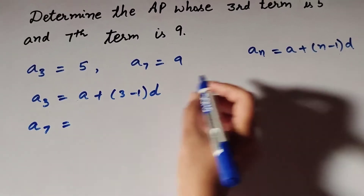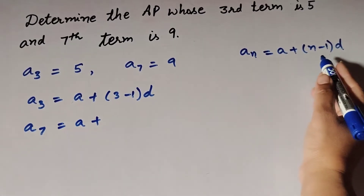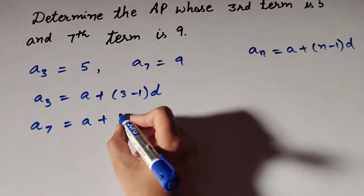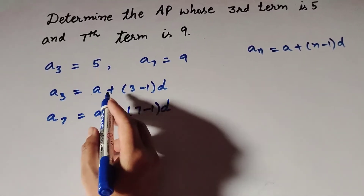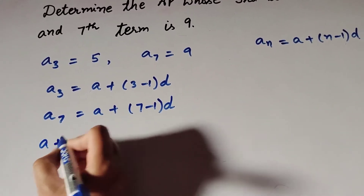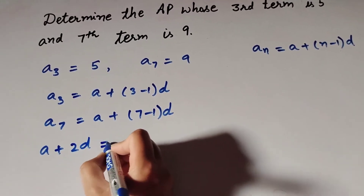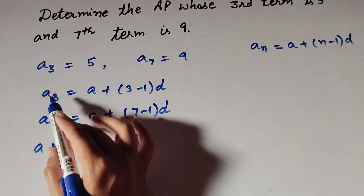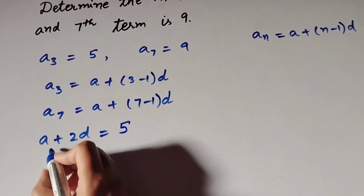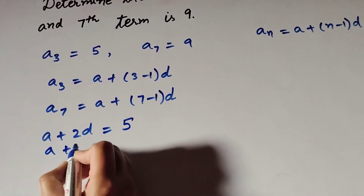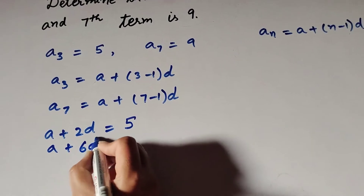For a7, n is equal to 7, so a7 equals a plus (7 minus 1) times d. We simplify: a plus 2d equals a3, which is given as 5. And a plus 6d equals a7, which is given as 9.